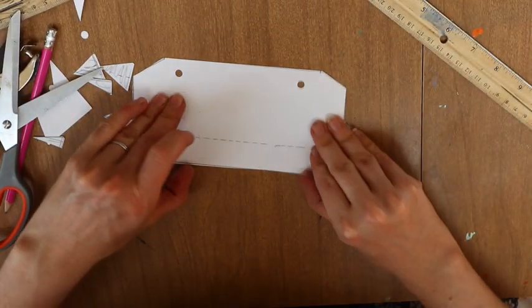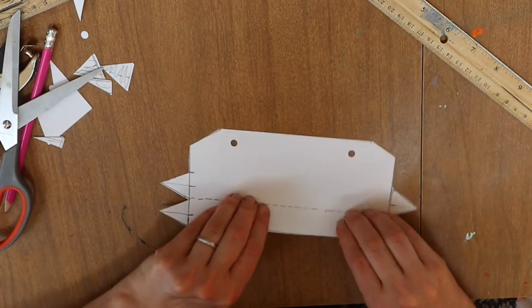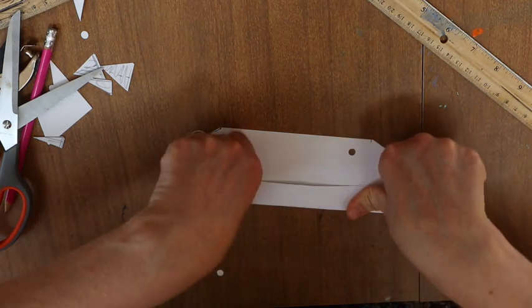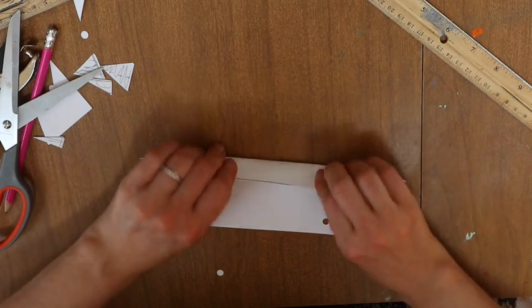Then we're going to fold and crease this middle line here. Let's fold it back and forth.